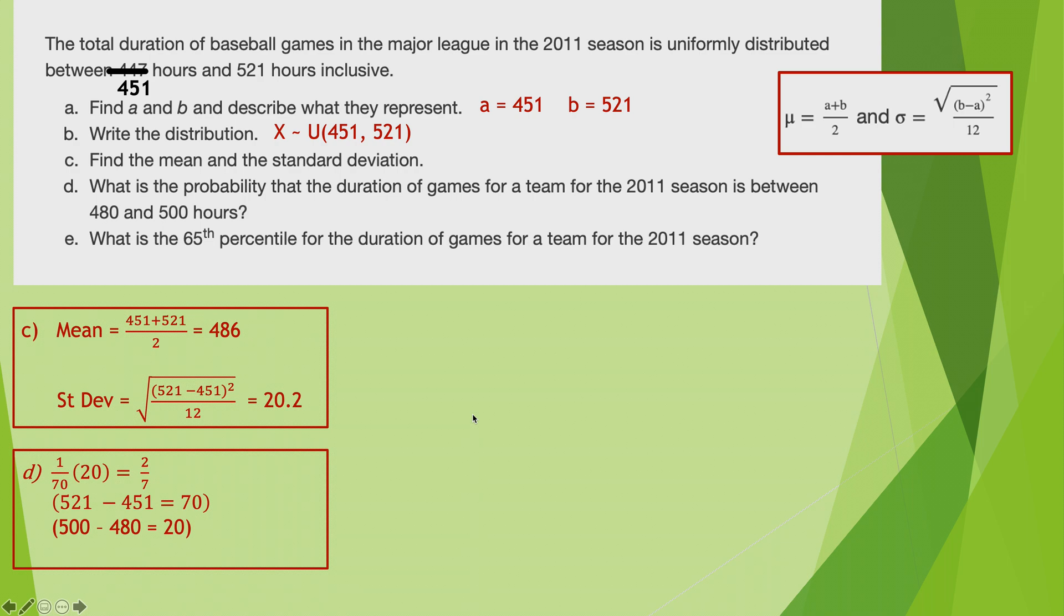The next part up in this said, what's the probability that the duration is between 480 and 500? So between 480 and 500 is a total of 20, and it's evenly distributed from 451 to 521, and that's a distance of 70. So it's 20 times 1/70th, which is 20 over 70, which reduces to 2/7ths.